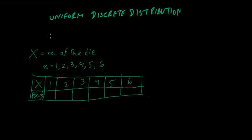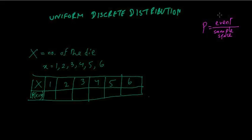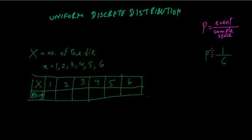The probability of any event is the number of favorable outcomes divided by the sample space — all possible outcomes. When rolling a die, there are 6 outcomes total. The probability of getting a 1 is 1 out of 6; the probability of getting a 2 is also 1 out of 6.